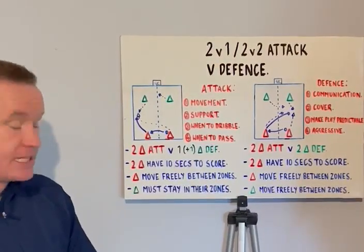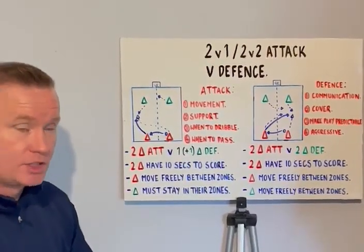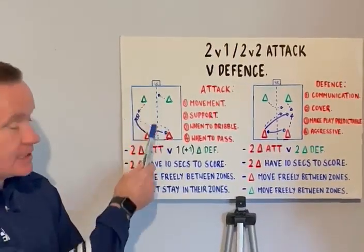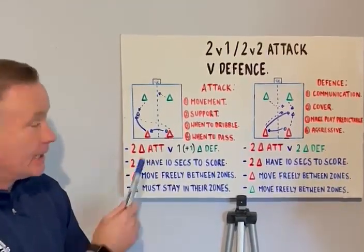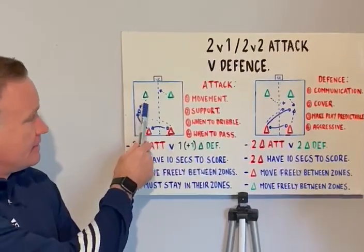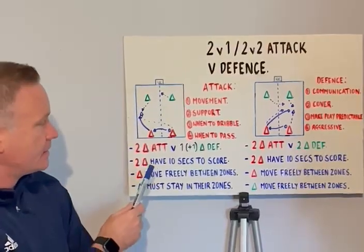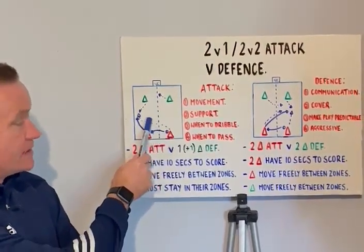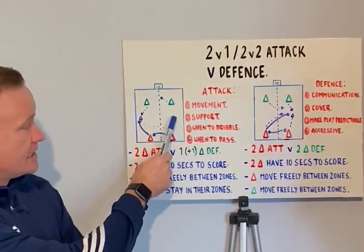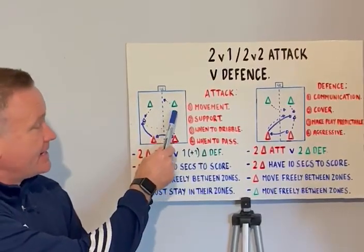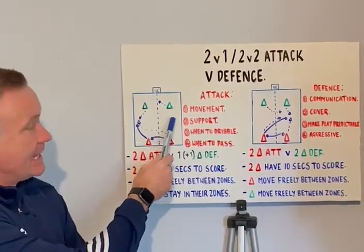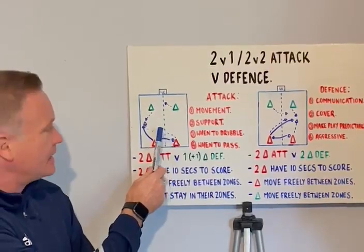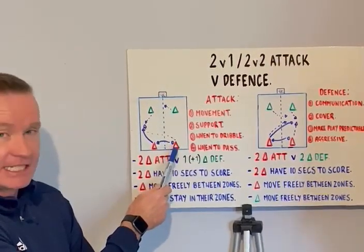The first activity, similar in setup to the previous ones, we've got two attackers who can move freely either side of this halfway line, with a goal and goalkeeper at this end of the area. The defenders are locked into their zones but working together. There's one ball between the two attackers and they can play combinations — both move into one side, both move to the other side, or split up. The defender becomes engaged when the ball is in their side of play, creating opportunities for the attackers to get a 2v1 overload.